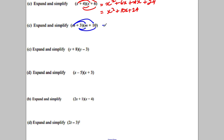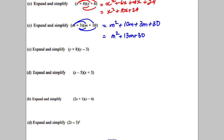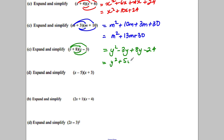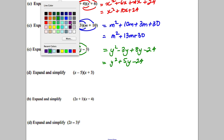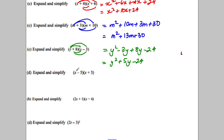Next one: m² + 10m + 3m + 30 — combining the middle term gives m² + 13m + 30. Next: y² − 3y + 8y − 24 — combining negative 3y and positive 8y gives positive 5y, so the result is y² + 5y − 24.